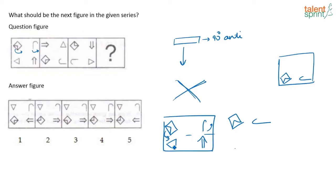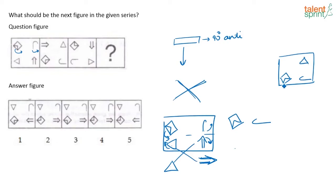Now when you look at these two bottom elements, what happens is they rotate 90 degrees clockwise — clockwise means in this direction. So this triangle will become like this and this one will also become like this after rotating 90 degrees clockwise. Now once they have rotated, what they do is they move diagonally to the opposite direction. So this triangle will come here — it was on this side — and this arrow from here will go here. That is how you get this answer.